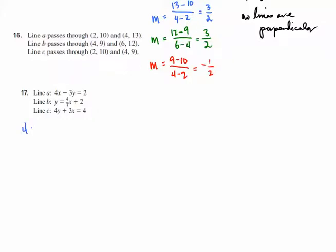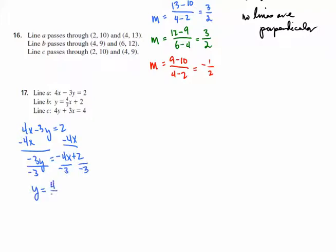For line A in blue: 4X minus 3Y equals 2. We subtract 4X from both sides to get negative 3Y equals negative 4X plus 2, then divide by negative 3. We get Y equals 4/3 X minus 2/3. The slope of line A is 4/3.